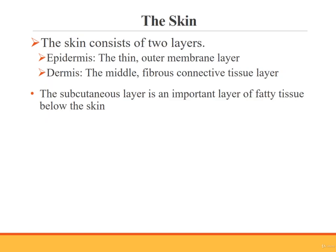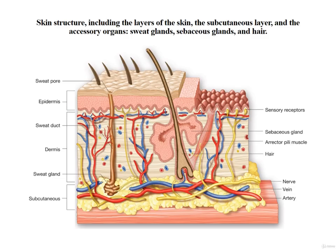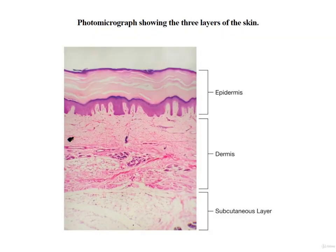The skin consists of two layers. Starting from the outer surface and moving inward, these layers are the epidermis and the dermis. Below the dermis lies a structure known as the subcutaneous layer. The epidermis is the thin outer membrane layer — the skin that you look at every day. The dermis is the middle fibrous connective tissue layer, which houses the accessory structures of the integumentary system. The subcutaneous layer is the innermost layer of fatty tissue, sometimes called the hypodermis. This figure shows the skin with its two layers, the subcutaneous layer, and the accessory organs.